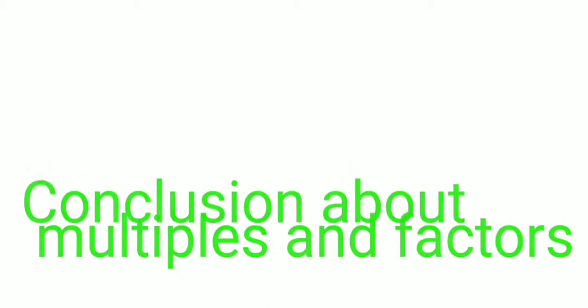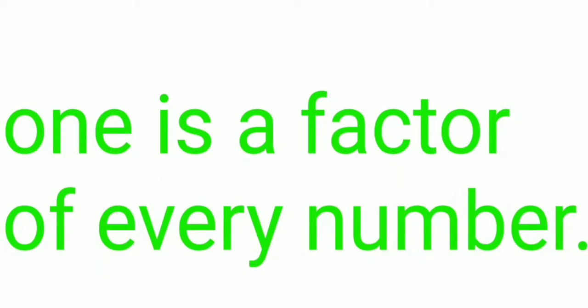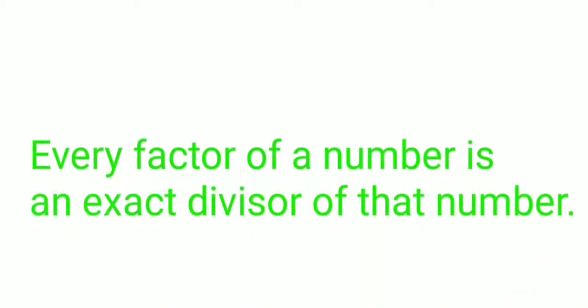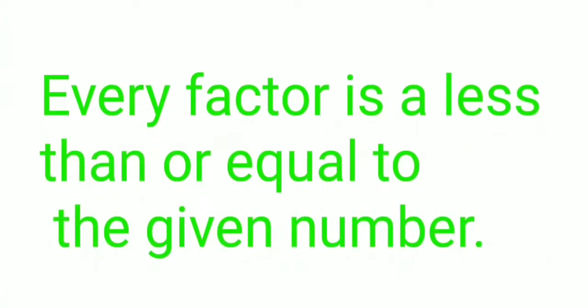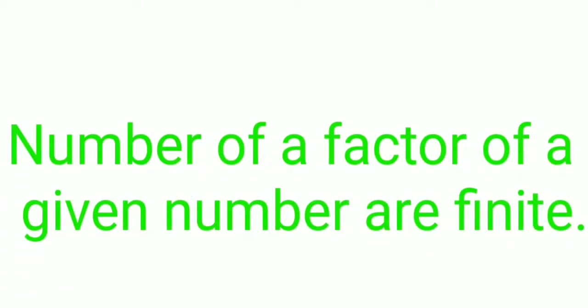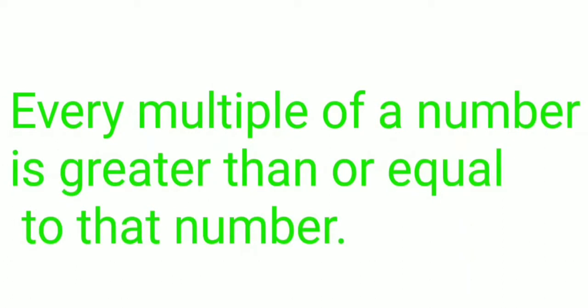Now let's see what we can conclude about factors and multiples. We can say: 1 is a factor of every number; every number is a factor of itself; every factor of a number is an exact divisor of that number; every factor is less than or equal to the given number; and the number of factors of a given number are finite. Every multiple of a number is greater than or equal to that number, the number of multiples is infinite, and every number is a multiple of itself.